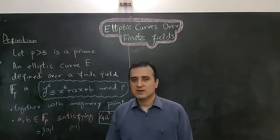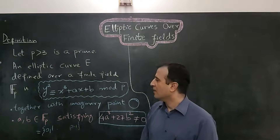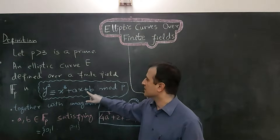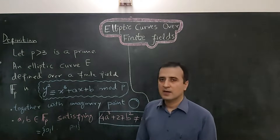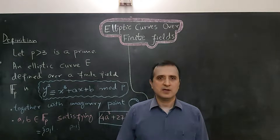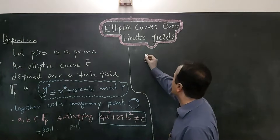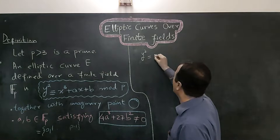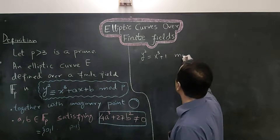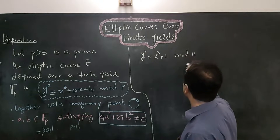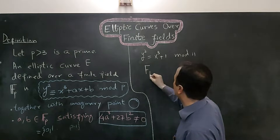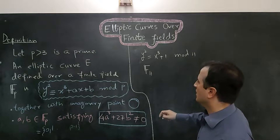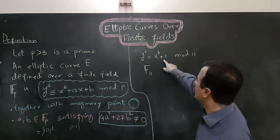Elliptic curves defined over a finite field have the following equation: y squared equals x cubed plus ax plus b, mod p. As an example, consider the curve y squared equals x cubed plus 1, mod 11, because this curve is defined over the finite field F11.